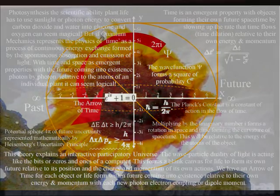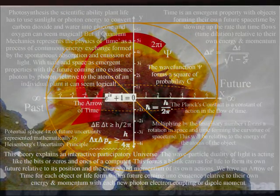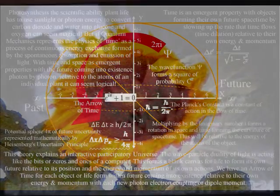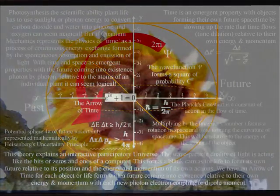...with the future coming into existence with each new photon-electron coupling or dipole moment within the reference frame, and relative to the atoms of an individual planet, it can seem logical. The exchange of photon energy forms the movement of positive and negative charge, and this is basically what we are seeing in photosynthesis.